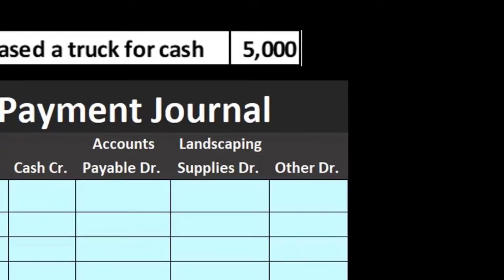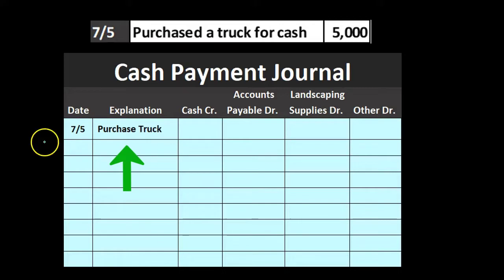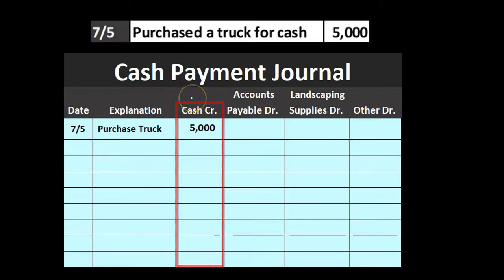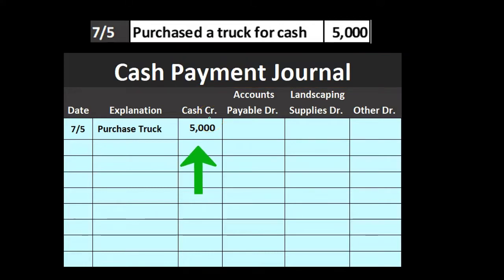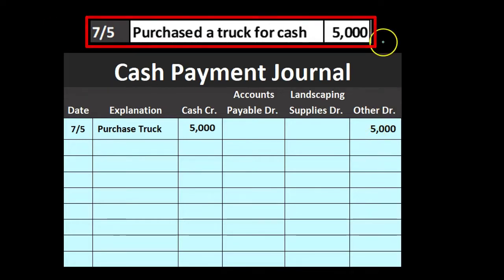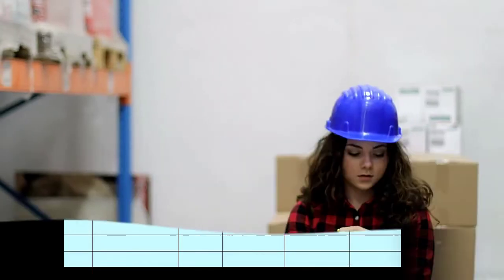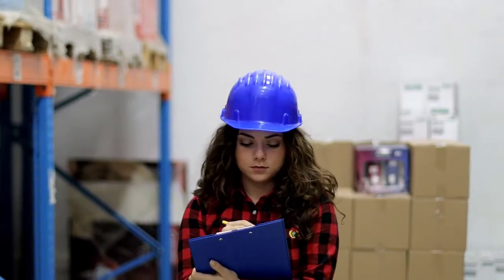Here are our transactions for the cash payment journal. Starting with purchasing a truck for cash of $5,000. We'll list the date, write 'purchase truck' as the explanation, and note the vendor name if relevant. We always have something in the cash column because we're dealing with the cash payment journal and cash is going down — we'll just label it a credit. The other side goes to 'other' in this case, since this isn't one of the standard recurring transactions like buying landscaping supplies or paying off an account.